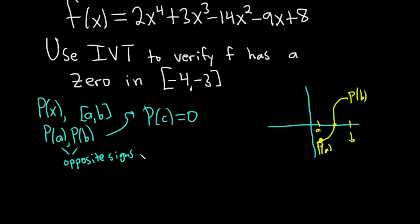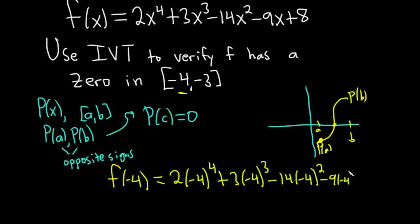So let's go ahead and plug in the endpoints here. So f of negative 4, that would be our a. In our problem it's f. And so if you put a negative 4 everywhere there's an x, 2 times negative 4 to the fourth plus 3 times negative 4 cubed minus 14 times negative 4 squared minus 9 times negative 4 plus 8.